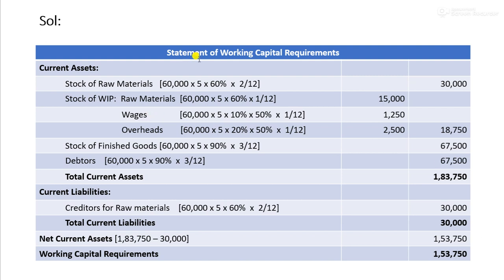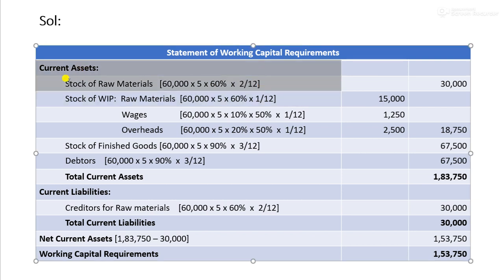Estimating the stock of raw material: production is 60,000 units. Raw materials are held for 2 months, so the calculation is 2 by 12. The stock of raw material is computed accordingly.